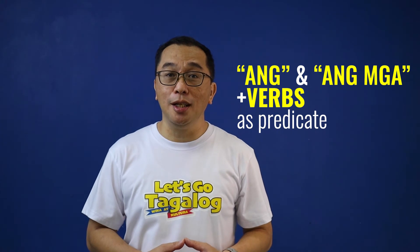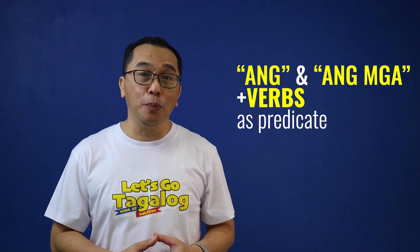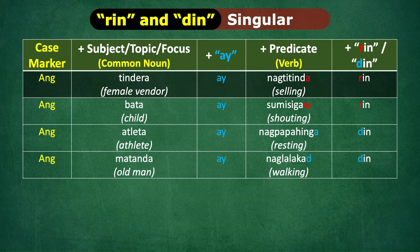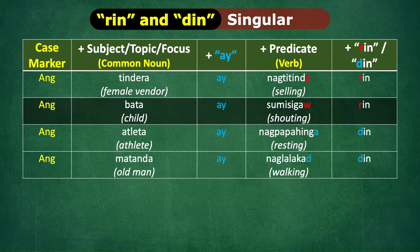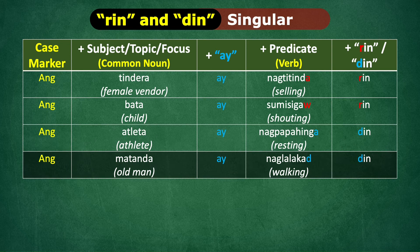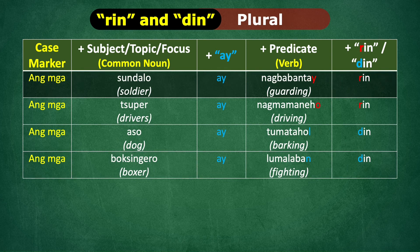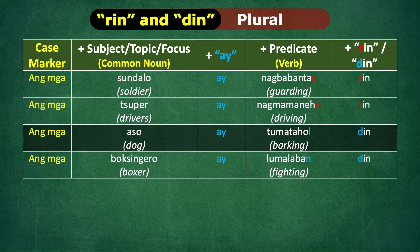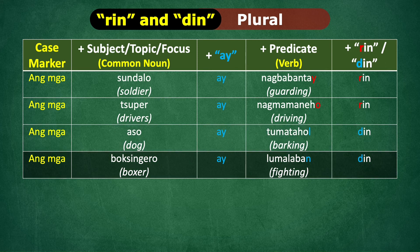Now, let us try using the singular case marker ang with its plural counterpart ang mga, with verbs as the predicate. Ang tindera ay nagtitinda rin. Ang bata ay sumisigaw rin — sumisigaw ends in a W, so we use rin. Ang atleta ay nagpapahinga din. Ang matanda ay naglalakad din. Let's check out the plural form. Ang mga sundalo ay nagbabantay rin — nagbabantay ends in a Y, so we use rin. Ang mga tsyuper ay nagmamaneho rin. Ang mga aso ay tumatahol din. Ang mga boksingero ay lumalaban din.